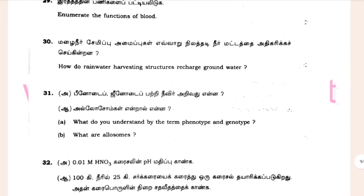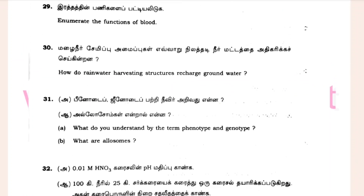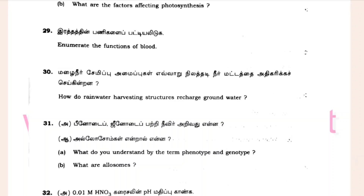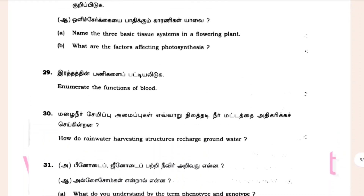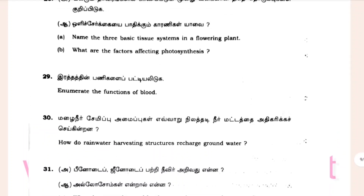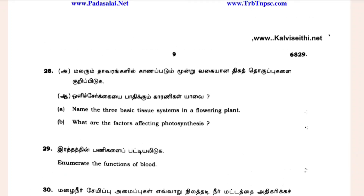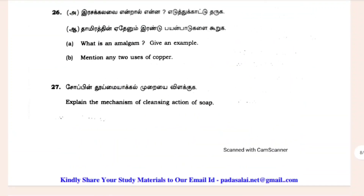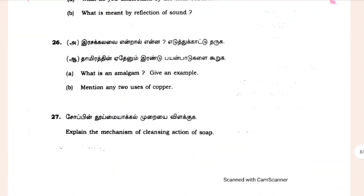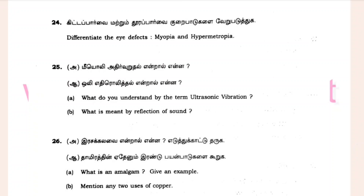Question 31: What do you understand by the terms phenotype and genotype? Question 30: How do rainwater harvesting structures recharge groundwater? Question 31: Name the three basic tissue systems in the flowering plant, and what are the factors affecting photosynthesis? Explain the mechanism of cleaning action of soap. What is an amalgam — give an example. Mention two uses of copper. What do you understand by ultrasonic vibration and what is meant by reflection of sodium?